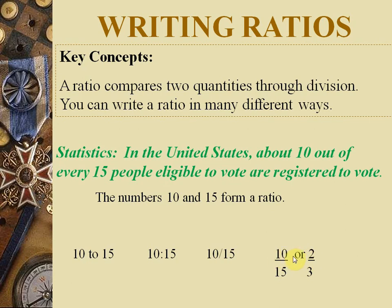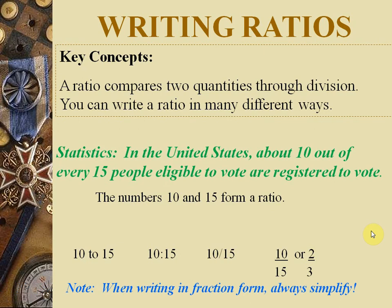When solving ratio questions, you must always give your answer in simplest form. To simplify, divide both quantities by the same number. In this ratio, 5 divides both 10 and 15, giving 2 over 3. You cannot divide the two numbers by different values — you must divide both by the same number to get the simplest form.